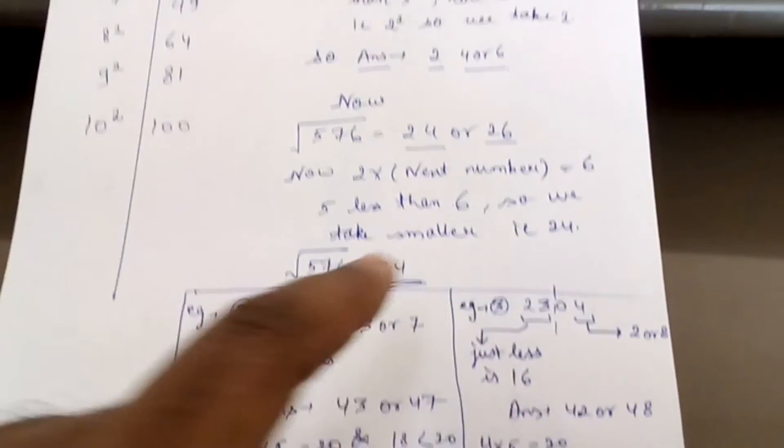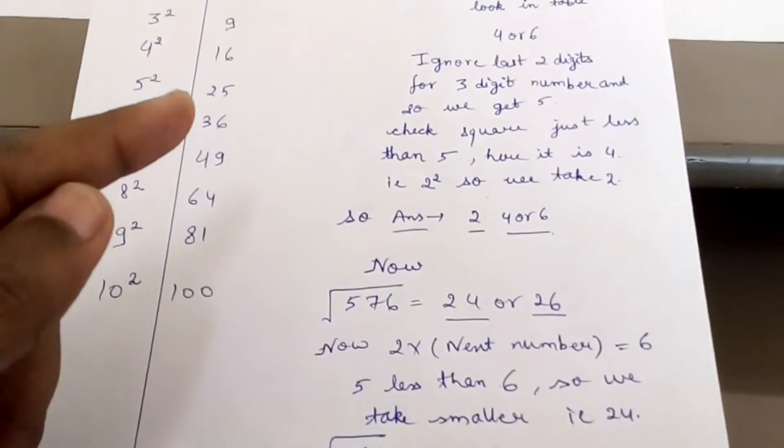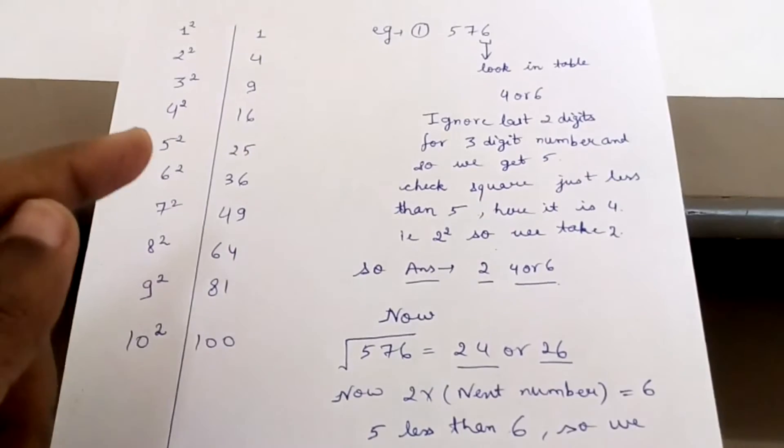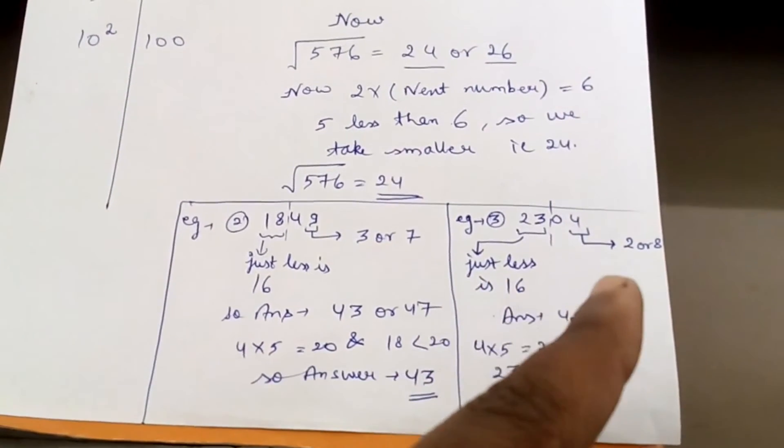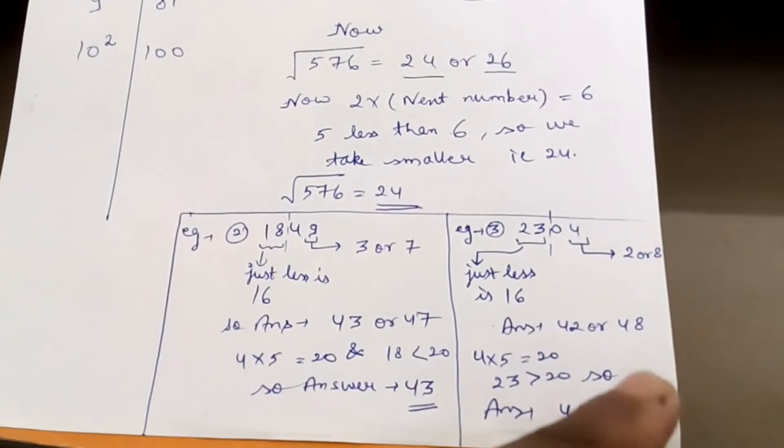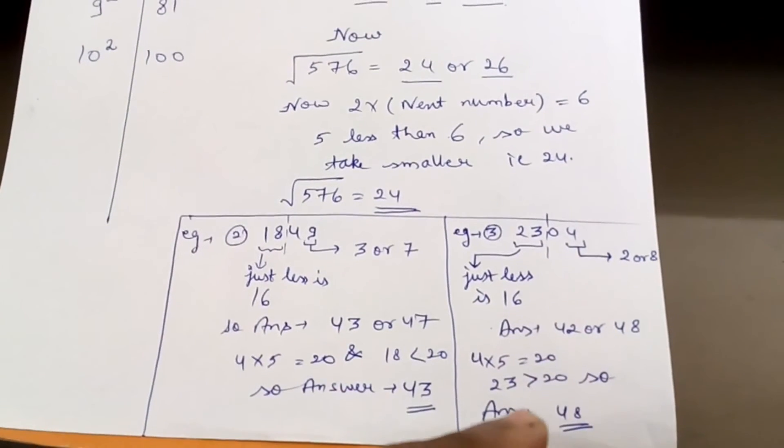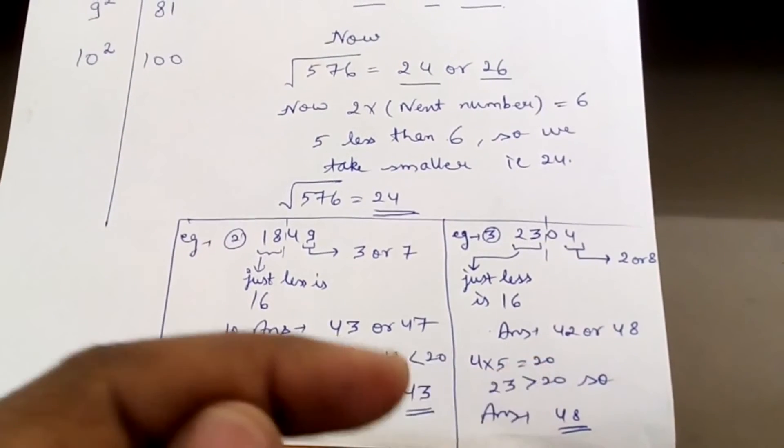So final square root will be 42 or 48. Now to eliminate and find the correct, what you do: 4 into next digit, that is 4 into 5, that is 20.